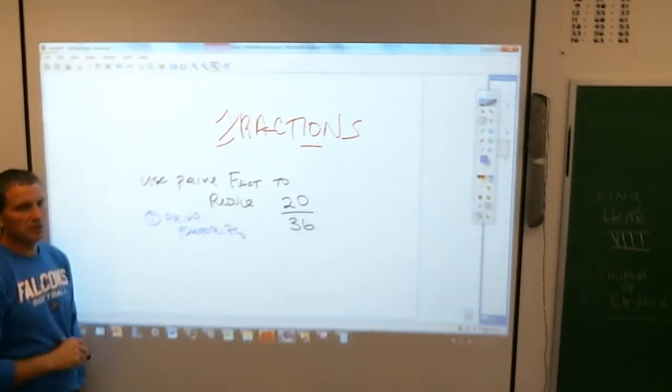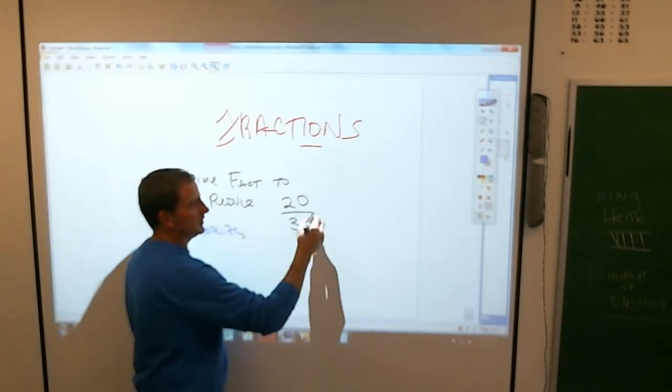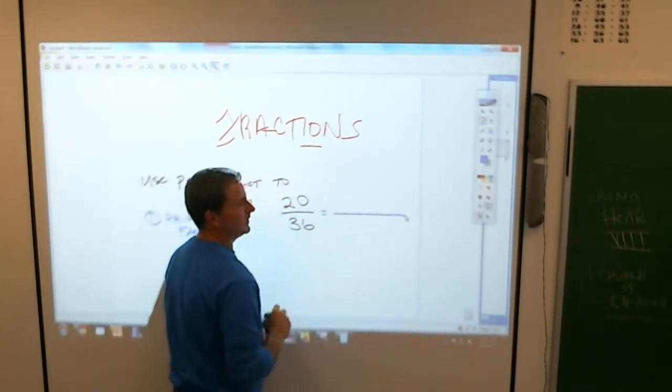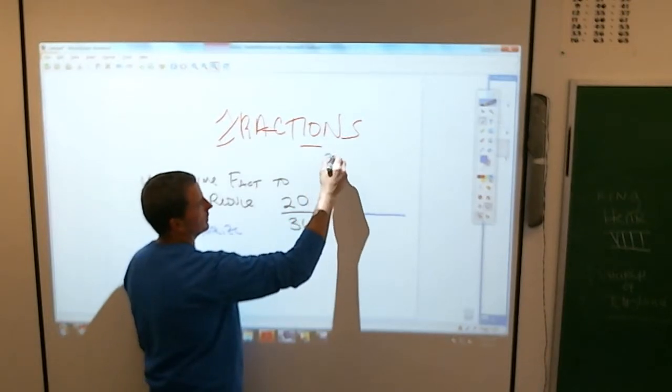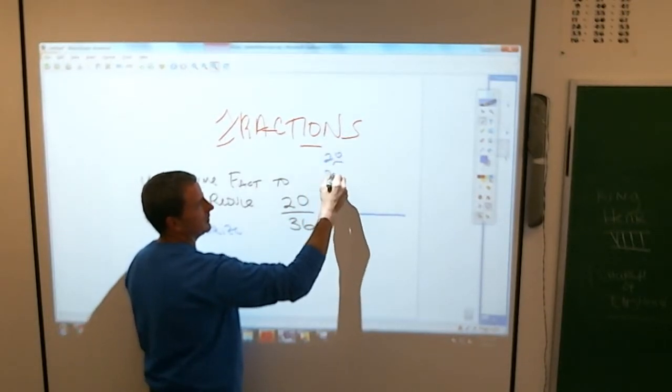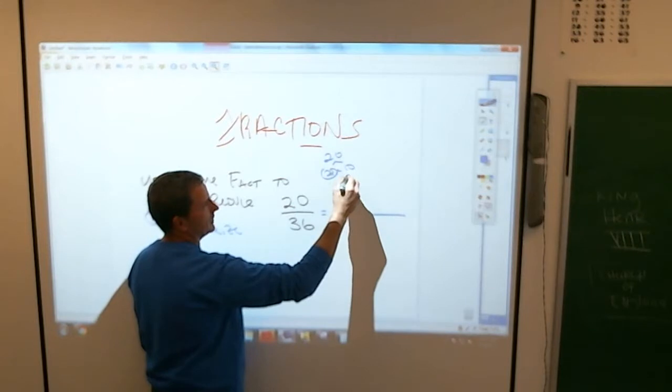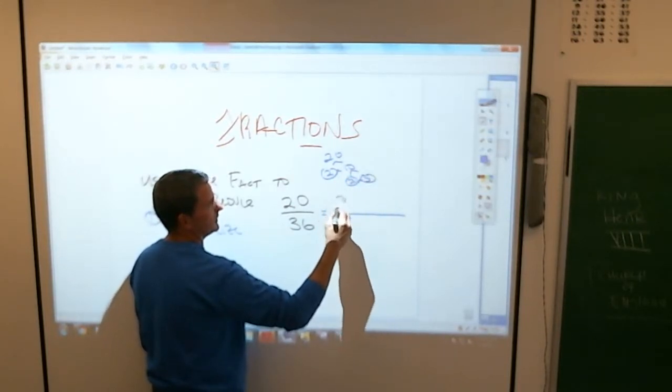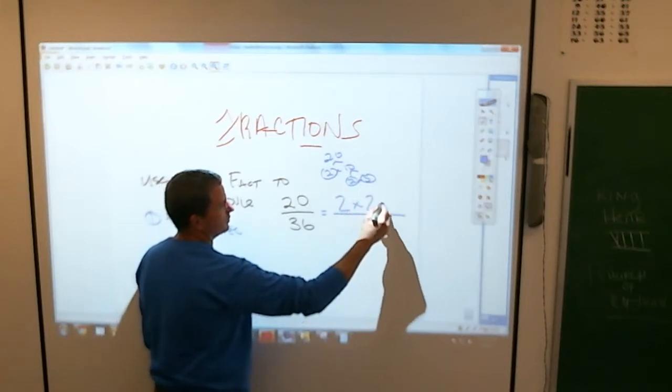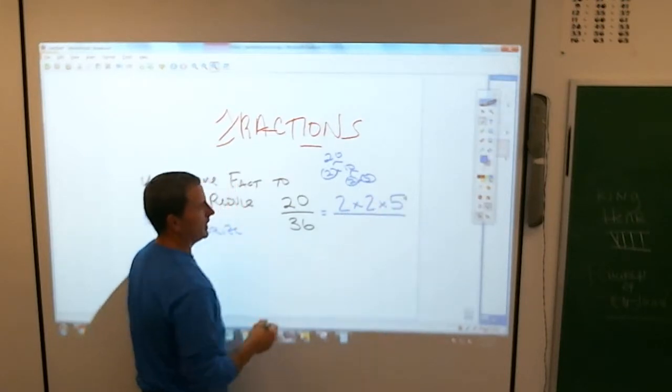Now, that doesn't mean I think you need to go to grade elects. Maybe you're getting good at this and you can do this in your head. If not, you're going to have to show it to me. What does 20 break down into? 2 times 10. And 10 breaks down into 2 times 5. So, the prime factorization of 20 is 2 times 2 times 5. You're going to have to show that.